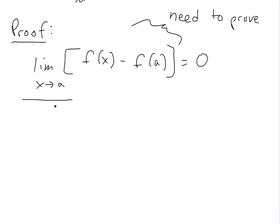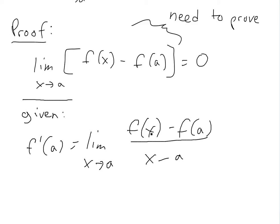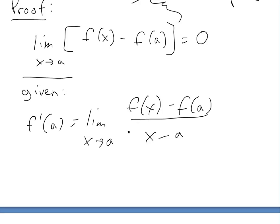We are given that the derivative exists at a, so we can write: f prime of a equals the limit as x approaches a of [f(x) minus f(a)] divided by [x minus a]. This is the definition of the derivative at a point — rise over run — and we're given that this limit exists.